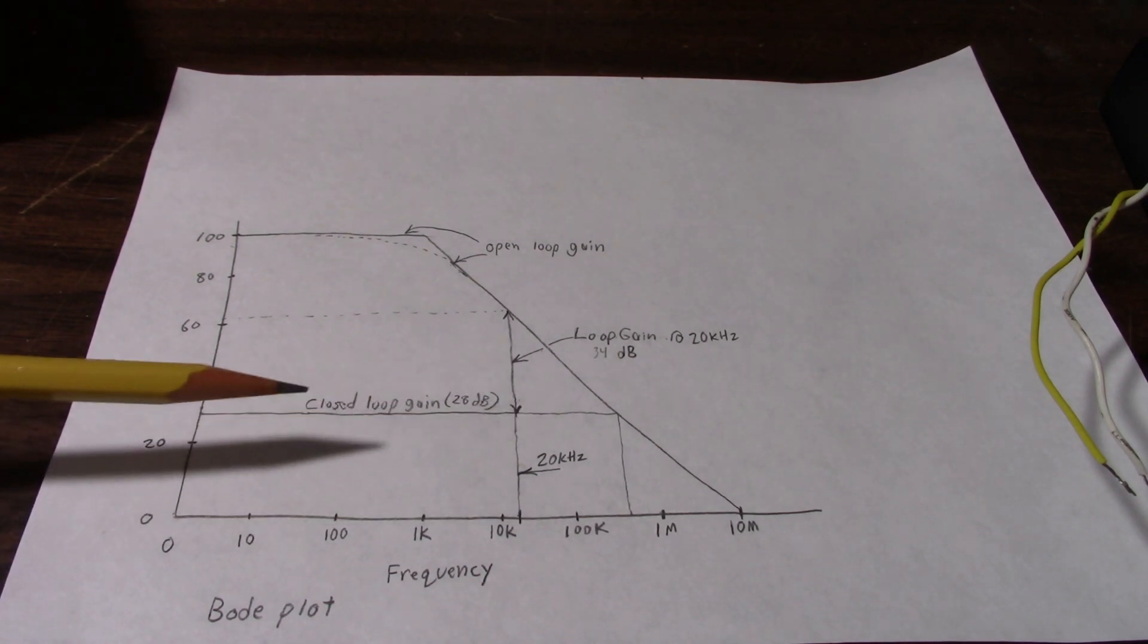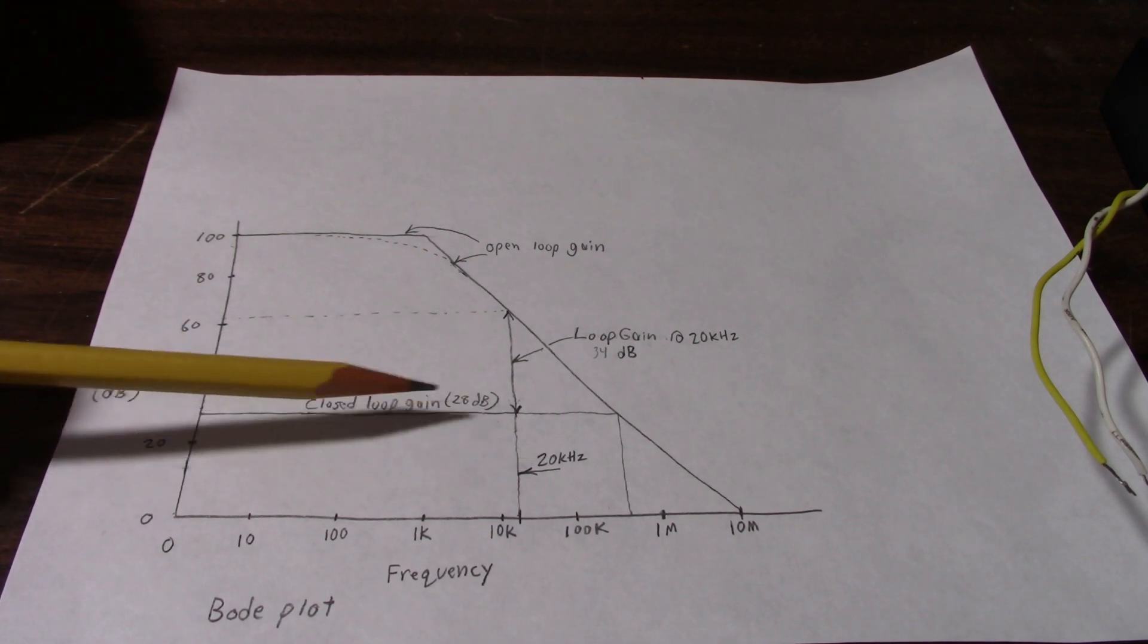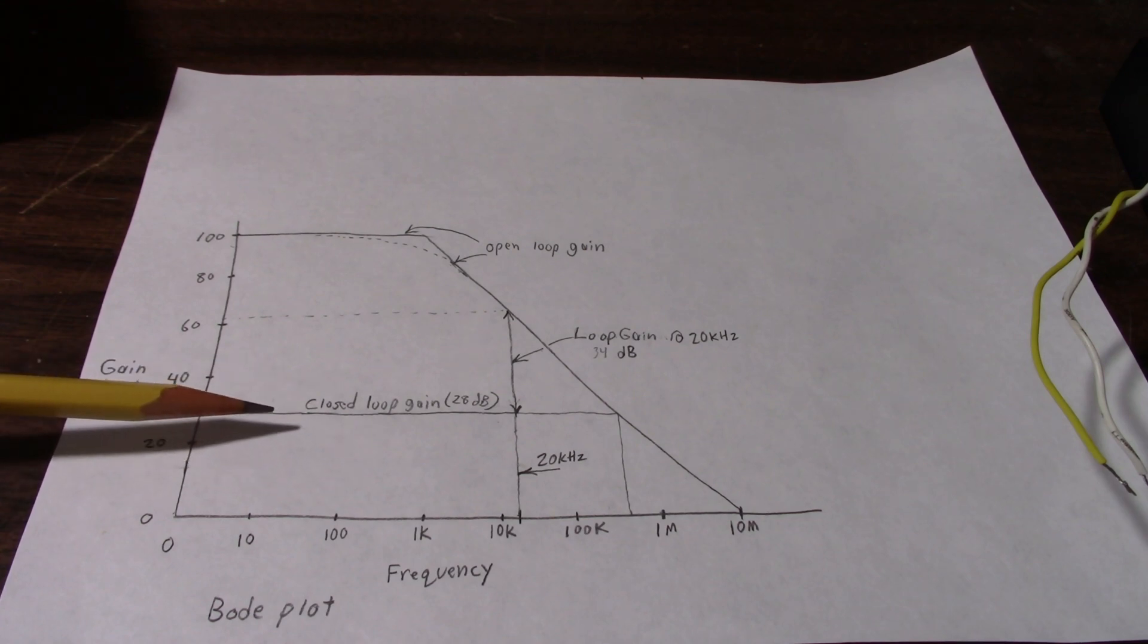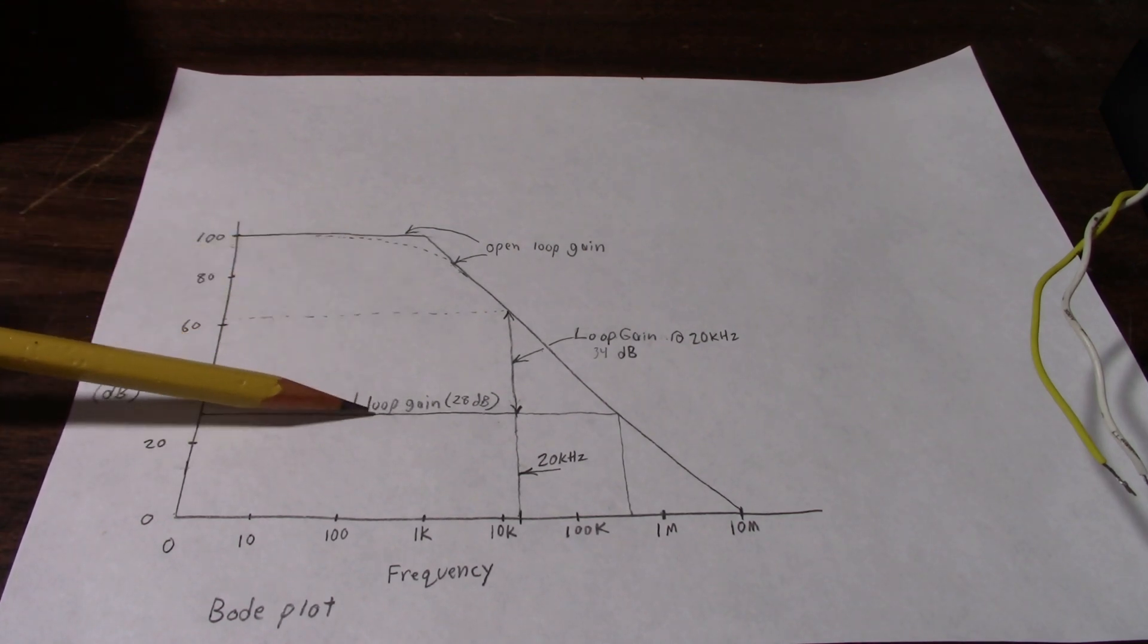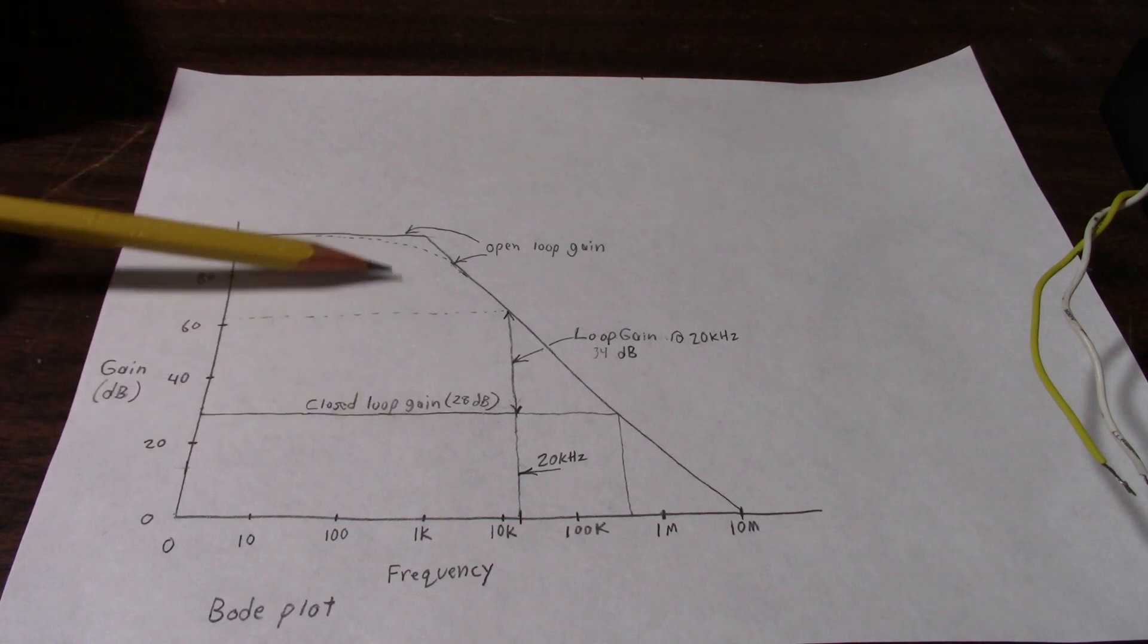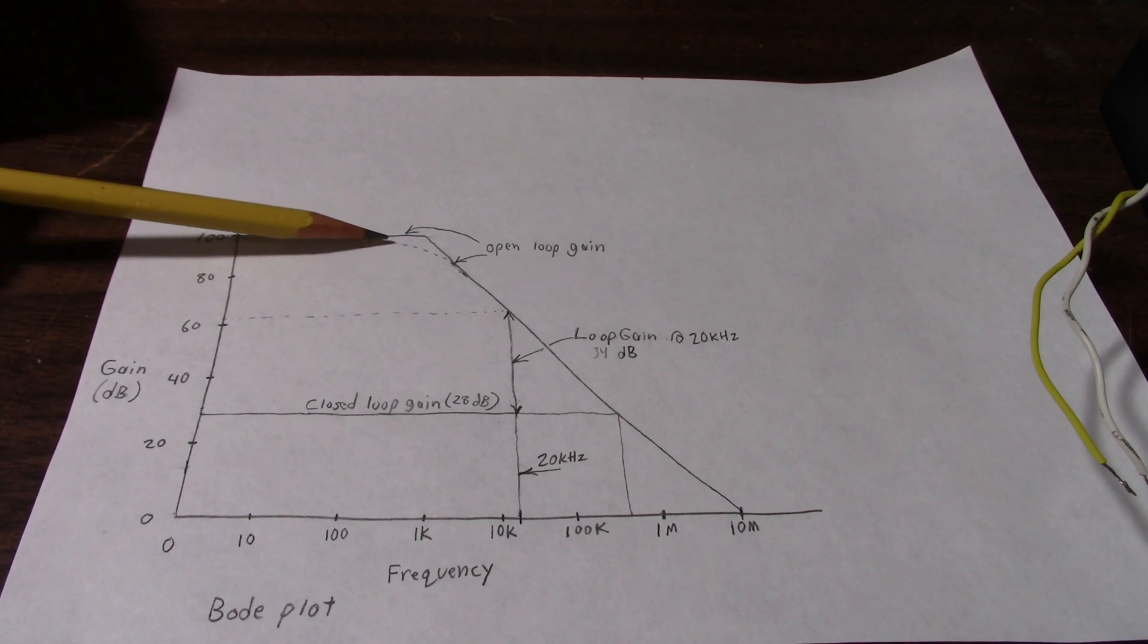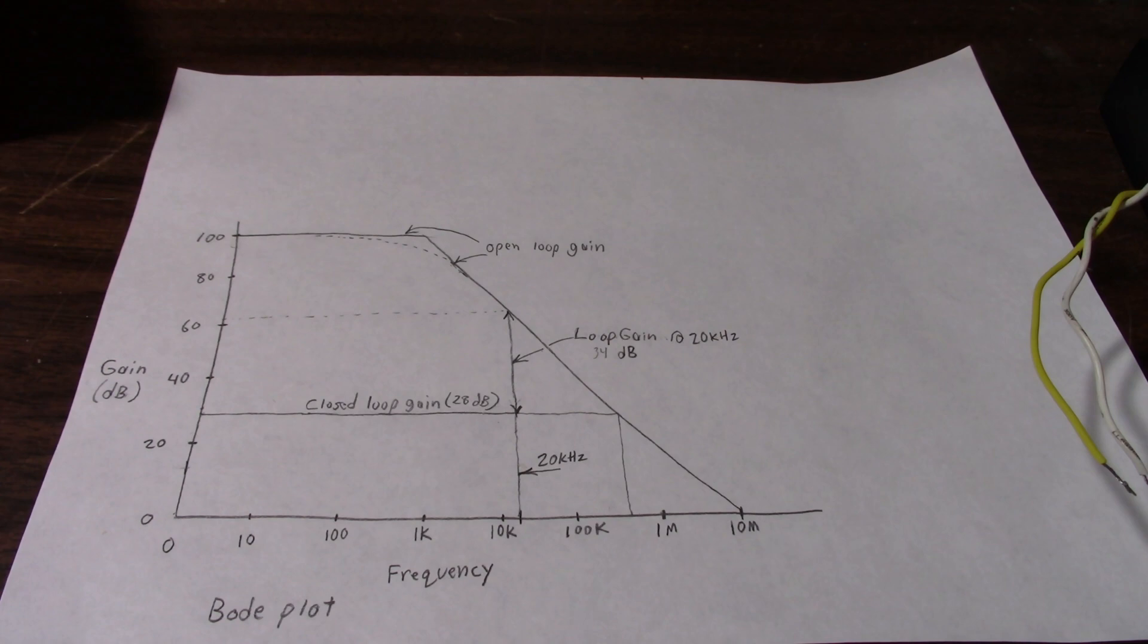Now negative feedback is used in an amplifier to linearize its output, in other words, to remove distortion and noise from its signal. Now for negative feedback to do its job, the amplifier has to have what's known as loop gain. And that's the amount of gain between open and closed loop. For if it didn't have any, negative feedback could not do its job to linearize the amplifier.